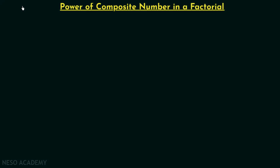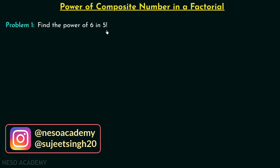In this presentation we are going to understand how to find out the power of a composite number in a given factorial. We will move on to problem number 1 directly. In this problem we need to find the power of 6 in 5 factorial. 6 is a composite number and we need to find the power of this composite number in 5 factorial.